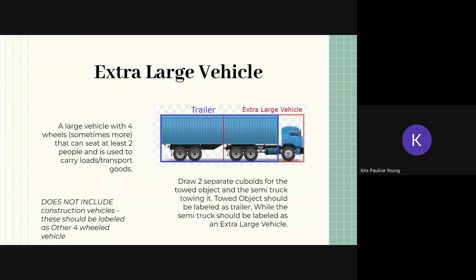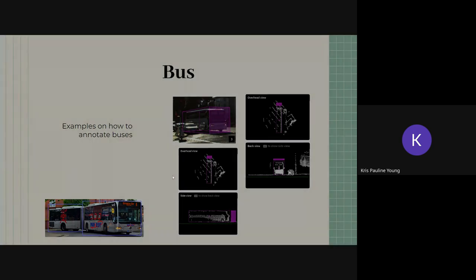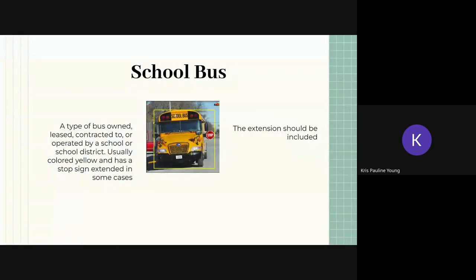For large vehicles or extra large vehicles and the trailer, this is how we like to annotate them. Annotate the trailer in one single cuboid, and then for the extra large vehicle, oftentimes you will have a pivot point which is like the six wheel. That's where you can stop your extra large vehicle cuboid size. For buses, this is the example of the bendy bus where we had to sort of separate the bus into two cuboids. School bus, include the stop sign whether it's extended or not.